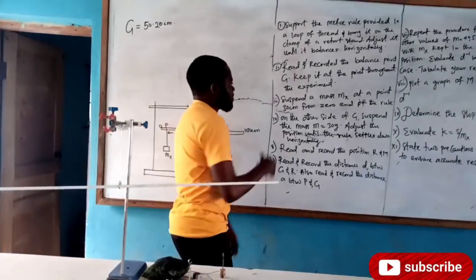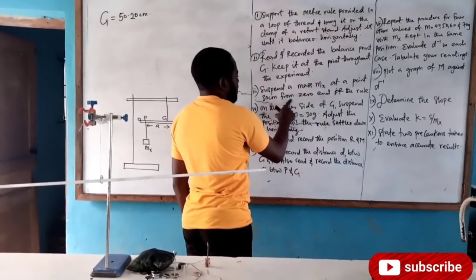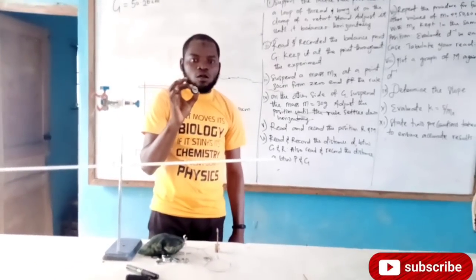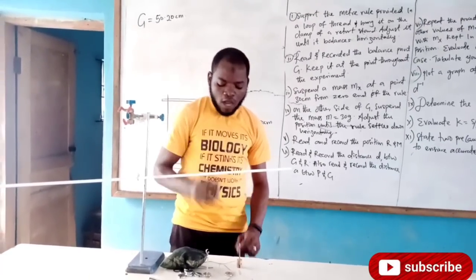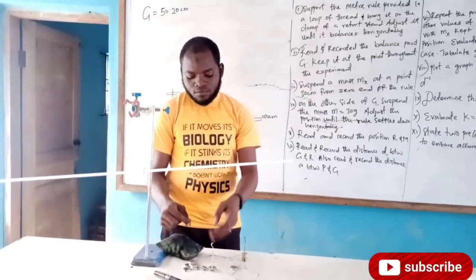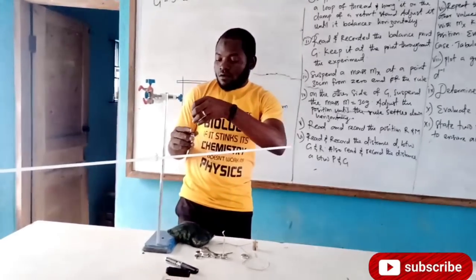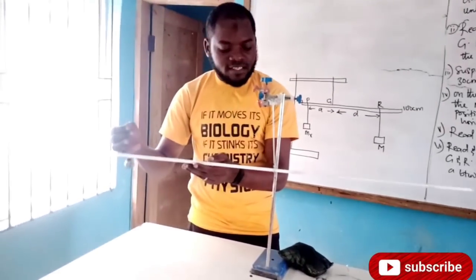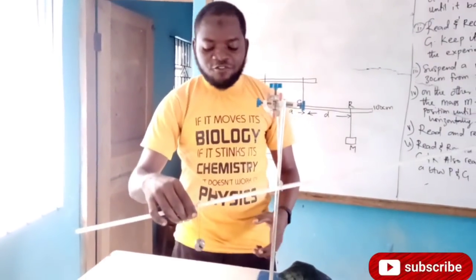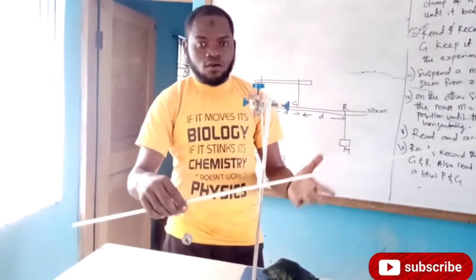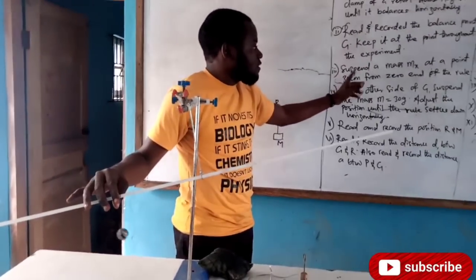The next question says: suspend a mass mx at a point 30 centimeters from zero. This is mass mx; I already know the value of this mass to be 50 grams. I'm going to suspend it now at the 30 centimeter mark. Here is my zero point, so I look at the 30 centimeter mark and leave it there. You can see that once I drop it there, the ruler is no longer balanced.